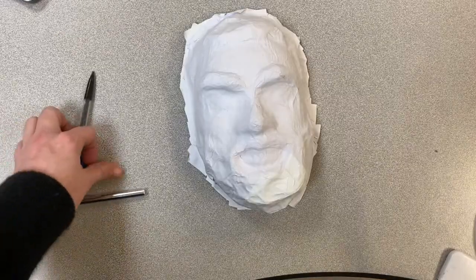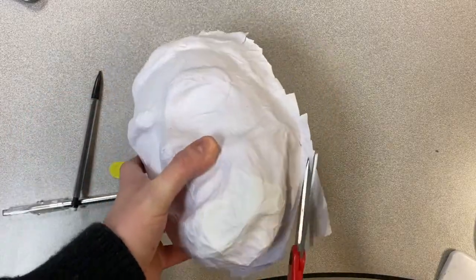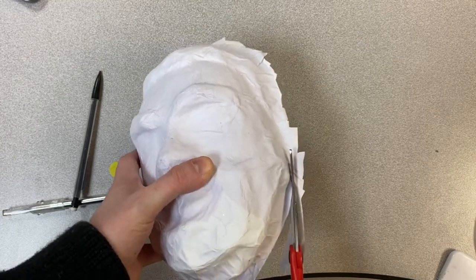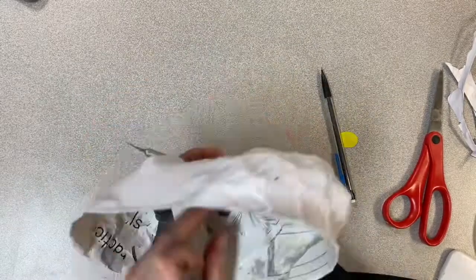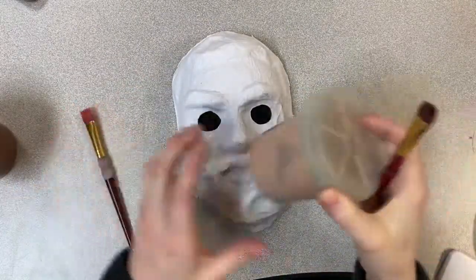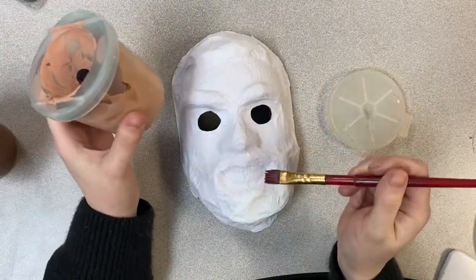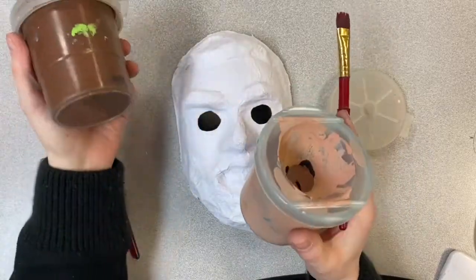Before you start painting I would trim off the excess paper on the side, and let me know if you would like your eyeballs cut out because I can do that for you too. Then you're ready to use the tempera paint in the jars to paint your mask however you would like. Remember to take your time and make sure everything is smoothed out so it looks the best you can.